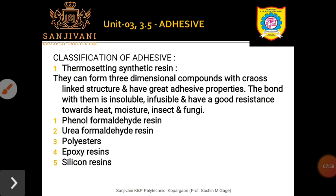Thermosetting synthetic resins form three-dimensional compounds with cross-linking structures. These resins have great adhesive properties. The bond with them is insoluble, infusible, and has good resistance towards heat, moisture, insects, and fungi. Examples include phenol formaldehyde resin, urea formaldehyde resin, polyester, epoxy resin, and silicone resins. Thermoplastic resins, on the other hand, are soluble, fusible, and have poor water resistance. They get softened on heating.